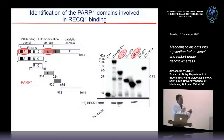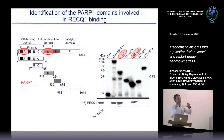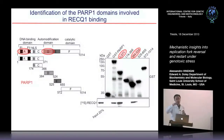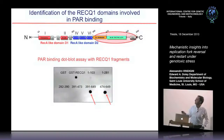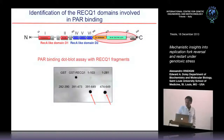Since PARP poly-ADP-ribosylates its targets and has poly-ADP ribose attached to itself, we checked whether RECQ1 also interacts with poly-ADP ribose directly. Using a dot blot experiment, we found that the same C-terminal domain of RECQ1 that binds PARP also binds poly-ADP ribose.